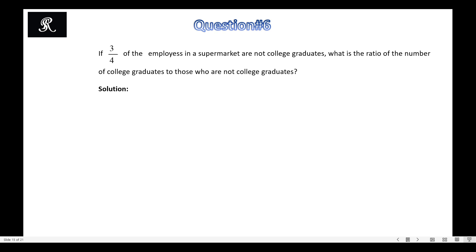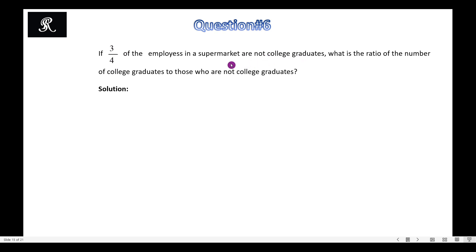Now here is question 6: if 3/4 of the employees in a supermarket are not college graduates, what is the ratio of the number of college graduates to those who are not college graduates? We are given that 3/4 of the employees are not college graduates. This means for every four employees, three are not college graduates.